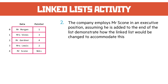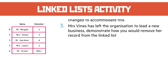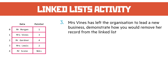Question 3: Mrs. Vines has left the organization to lead a new business — demonstrate how you'd remove her from the table. What you do here is very simple. You just take the pointer that originally pointed to Mrs. Vines, so from Mr. Morgan, and replace it to point to whichever pointer is in Mrs. Vines. So we take that pointer from Mrs. Vines, which is 3, and set it as the pointer for Mr. Morgan. This removes Mrs. Vines completely from the data structure.